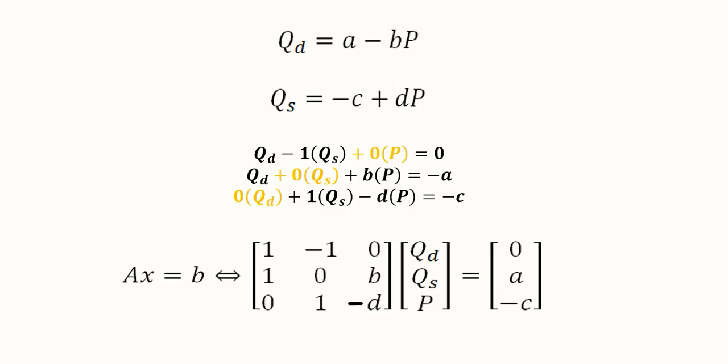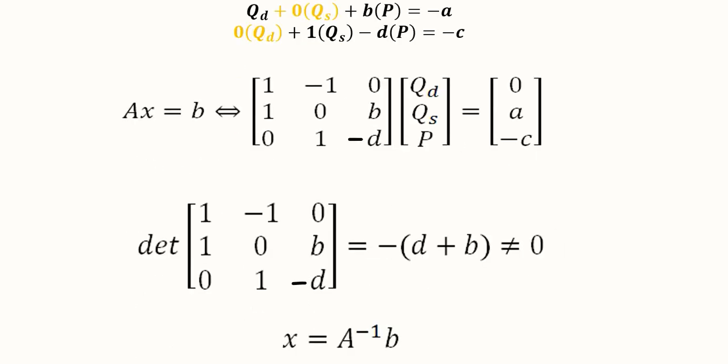The order is the same: Qd, Qs, and then price. These are the three variables and we have written them in the same order. This is the constant matrix. Now we can solve this. We can easily solve the determinant.